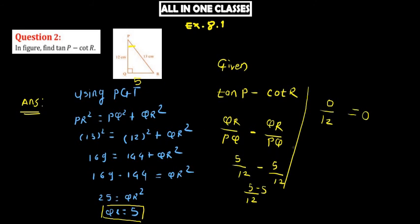Answer is 0. We find that tan P minus cot R is equal to 0.